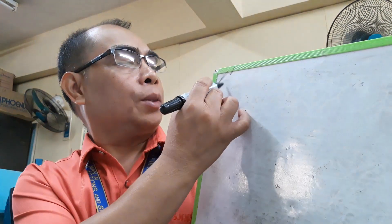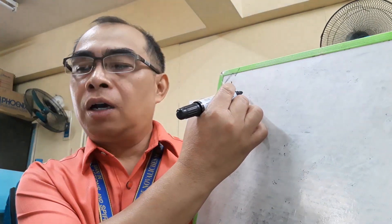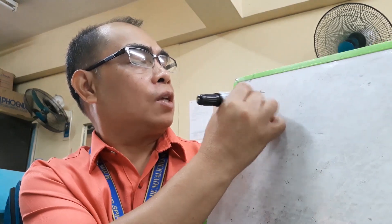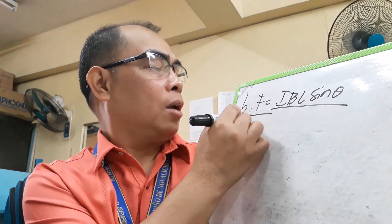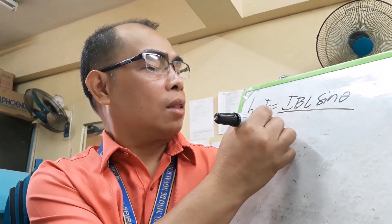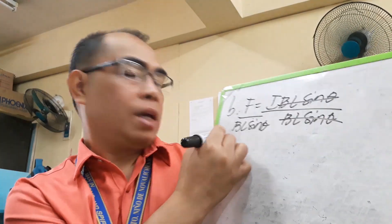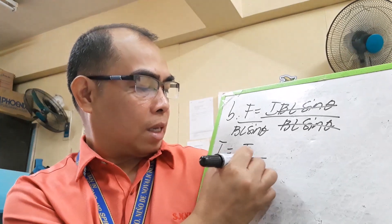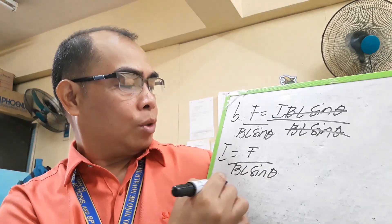Now for letter B, the unknown is current I. Starting from F = IBL sin θ, we divide both sides by BL sin θ, giving us I = F / (BL sin θ). We cancel terms and arrive at this rearranged equation.